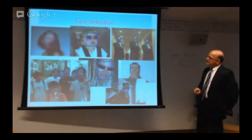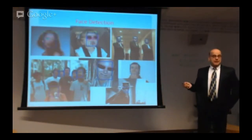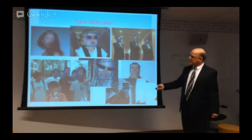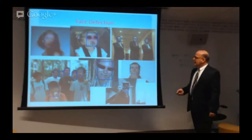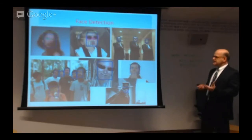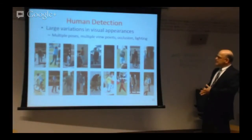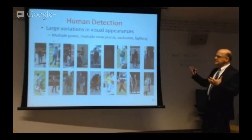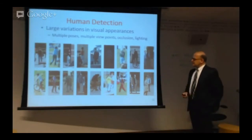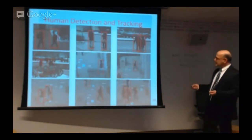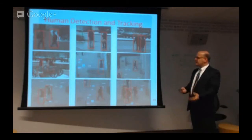Face detection is a challenging, unsolved problem. It's not always a frontal face — for example, a face in profile may not be detected. You can also have occlusions and intentional disguise. Detecting humans is also a problem that requires additional work, because there are huge variations in visual appearance. For humans it's a very automated process to recognize other humans, but not so much for the machine. And after you detect humans, you want to track them — dealing with occlusions, rotations, illumination changes, and so on.